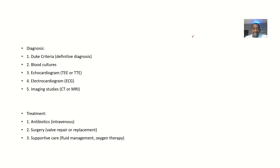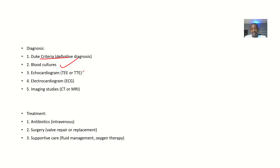For diagnosis, the Duke Criteria is used as a definitive diagnostic tool. Blood cultures are taken to identify the causative organism. Echocardiogram can show enlarged heart chambers, electrocardiogram can reveal abnormal waves, and imaging studies can show signs of heart failure or cardiomyopathy.